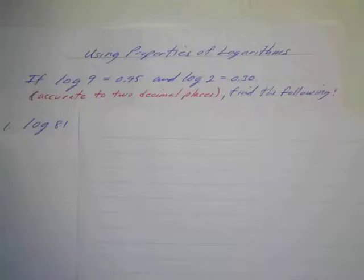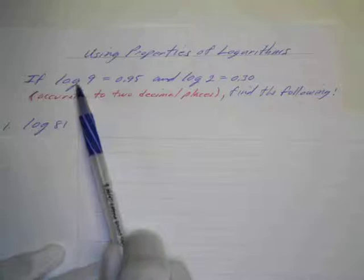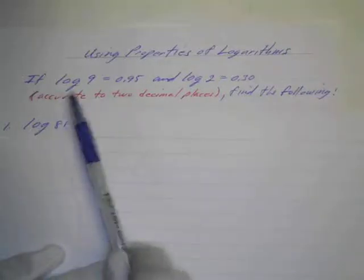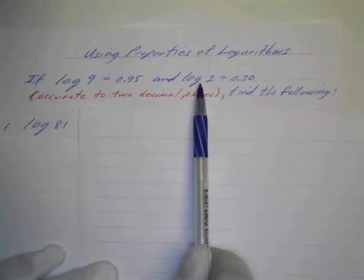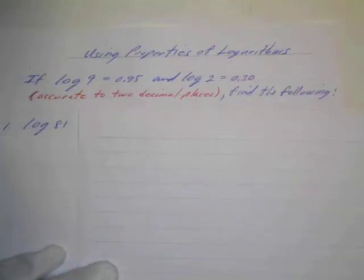In this case we're given the fact that the log of 9, now if we don't see any base here it's understood to be base 10, so log base 10 of 9 is 0.95 and log base 10 of 2 is 0.30. These are just accurate to two decimal places so these are rounded off.